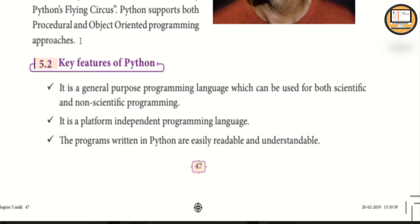Python supports both procedural and object-oriented programming approaches. Procedural programming is like using subroutines and functions — it is a structured programming approach. Examples of procedural programming languages include COBOL, Fortran, and BASIC. Object-oriented programming is object-based, organizing data as attributes and code as methods.